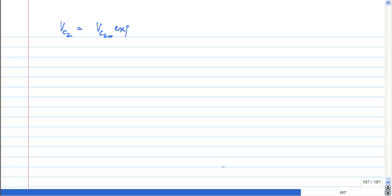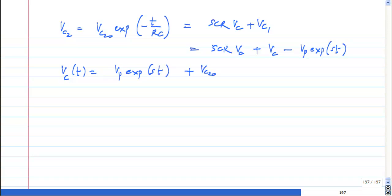Vc2(0) exponential minus t by RC equals SCR times Vc plus Vc1. This Vc1 itself is nothing but Vc of t equals Vp exponential st plus Vc2(0) exponential minus t by RC divided by SCR plus 1.